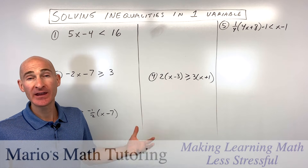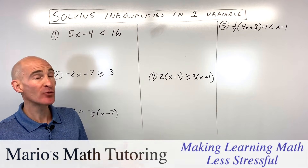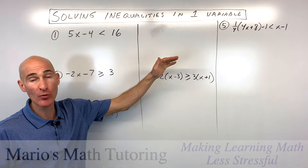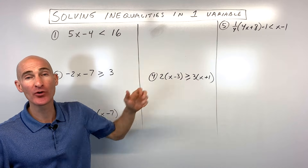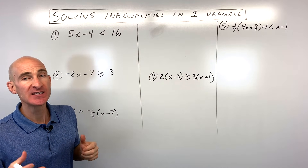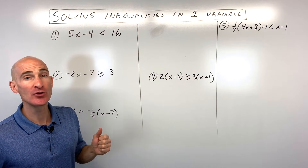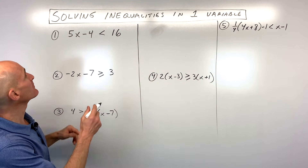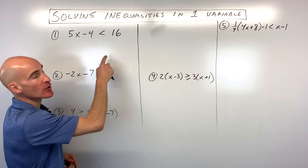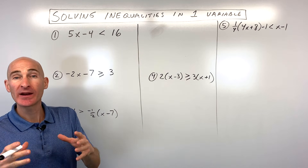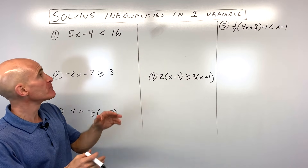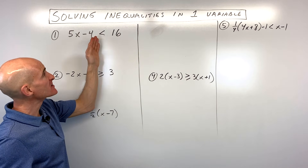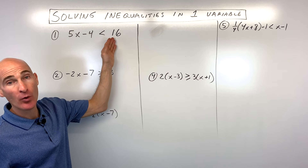We're going to go through five inequalities. We're going to start out with some simple ones and get a little bit more challenging as we go through these. See if you can pause the video and do these on your own. When you're solving these inequalities, you want to get the variable by itself on one side of the inequality.